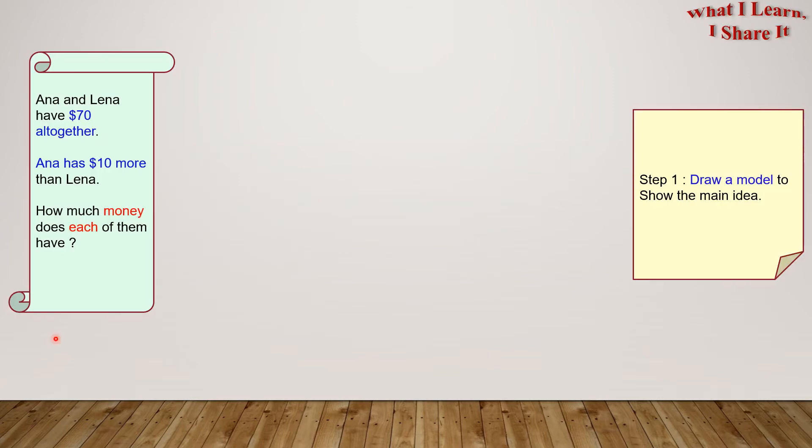Let's start by drawing a model of what we know. We know that Anna and Lena together have $70. Here we have a rectangle showing $70. Next, we know that Anna has $10 more than Lena. Let's have this box for Anna and this box for Lena. Since Anna has $10 more, I made a slightly bigger rectangle for her.